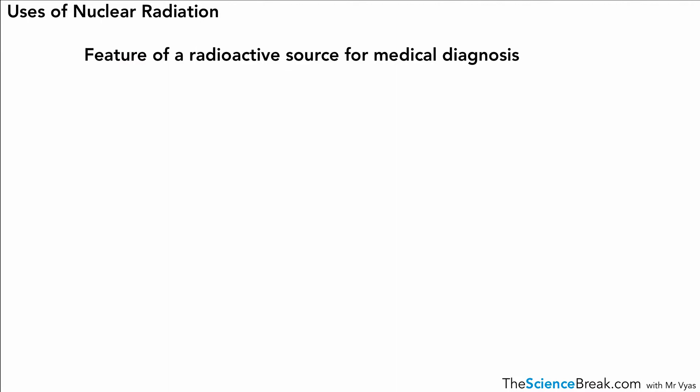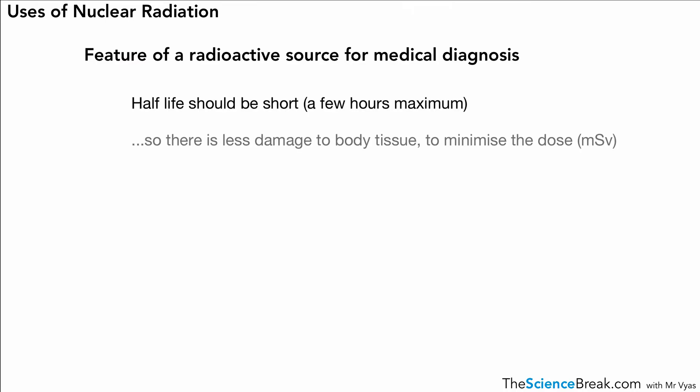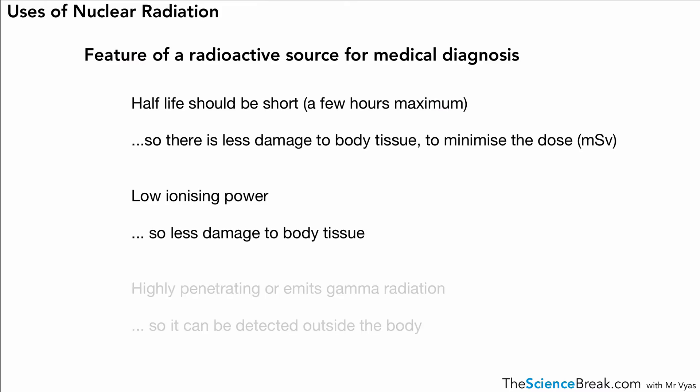Here is a summary of the features of a radioactive source needed for medical diagnosis. First, the half-life should be short - a few hours maximum - so that there's less damage to body tissue and to minimize the dose. The second one is low ionizing power, so less damage is done to body tissue.